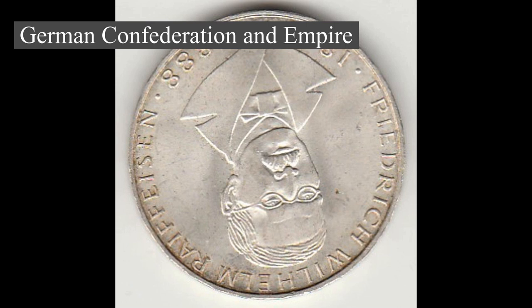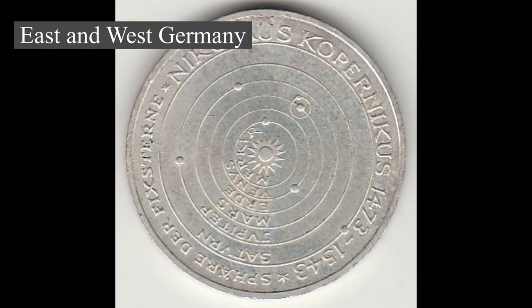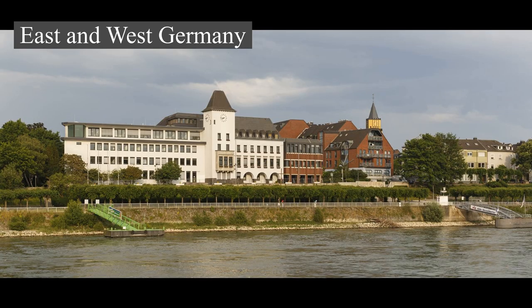Germany lost around 13 percent of its European territory and ceded all of its colonial possessions. Reunified Germany was considered the enlarged continuation of West Germany, so it retained its memberships in international organizations. Based on the Berlin/Bonn Act of 1994, Berlin again became the capital of Germany, while Bonn obtained the unique status of a federal city retaining some federal ministries. The relocation of the government was completed in 1999. Since reunification, Germany has taken a more active role in the European Union, signing the Maastricht Treaty in 1992 and the Lisbon Treaty in 2007, and co-founding the Eurozone.